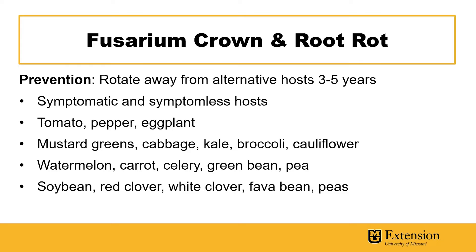Rotation is important when managing Fusarium crown and root rot, although it can be challenging because a wide variety of alternative hosts exist. Alternative hosts can include symptomatic hosts that show signs of infection, as well as symptomless hosts that show no signs of infection. Tomato, pepper, and eggplant should be avoided in rotation.